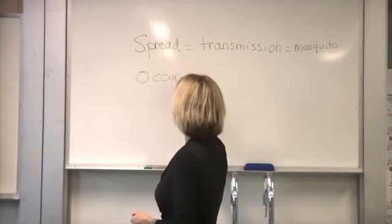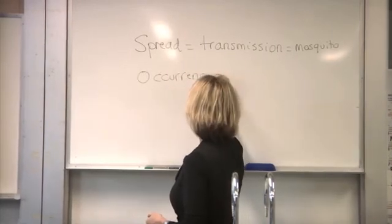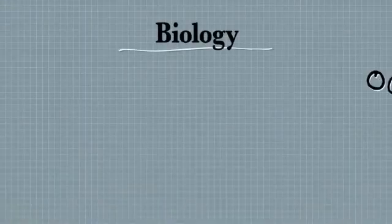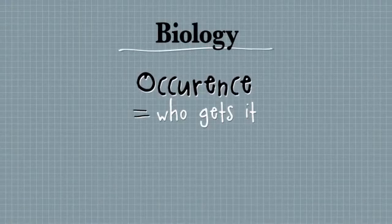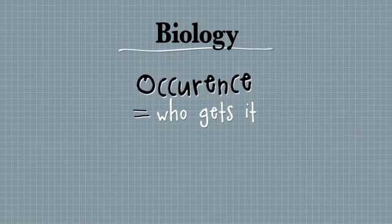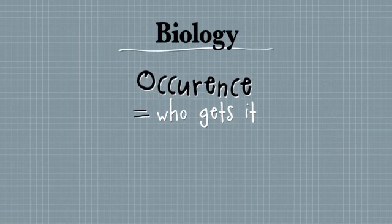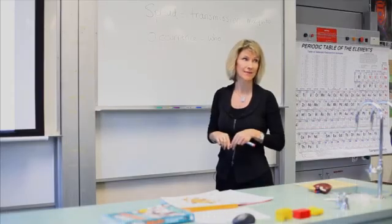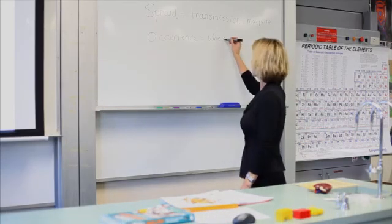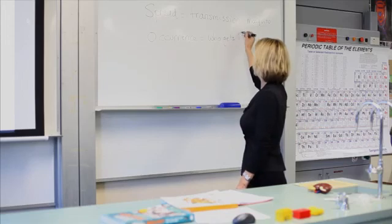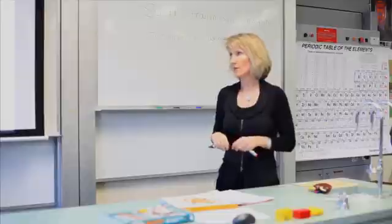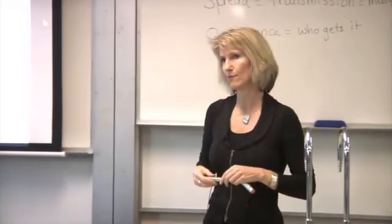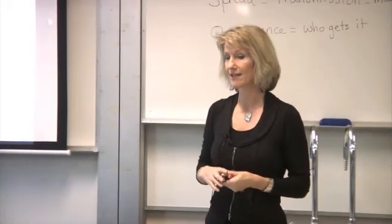The occurrence, lots of students either left this out or they didn't really know what it meant. It means who gets it. So if it was malaria, you would say it's more common in Africa. It's the number one cause of death in infectious diseases in the world still today. So who gets it? If it was Alzheimer's disease you were writing about, you would say elderly people. If it was haemophilia, you would say it's more common in males. So that's occurrence.